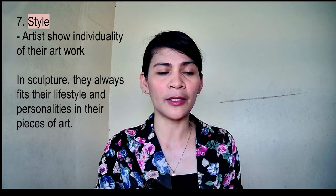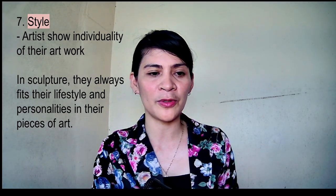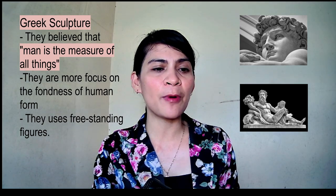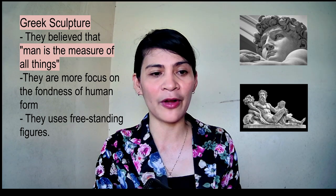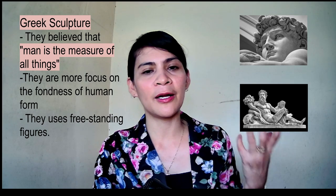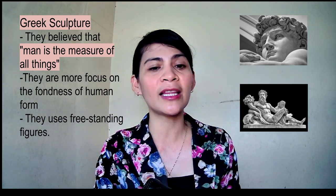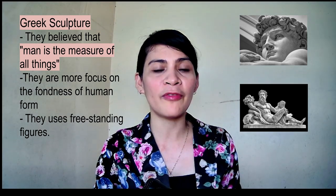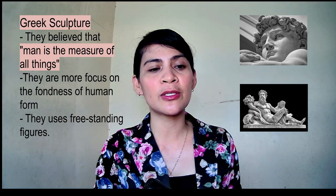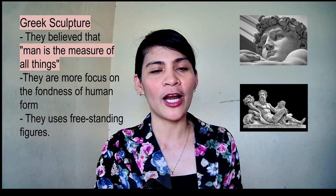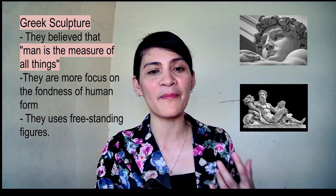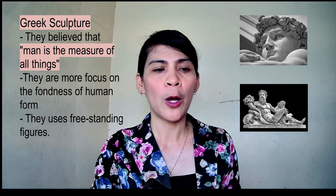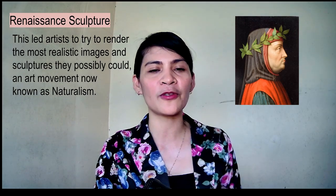Now let's talk about Greek sculpture. The Greeks believed that man is the measure of all things. That is why their sculpture is very focused on the fondness of the human form. The Greeks use freestanding figures — for example, the body of a woman or a man — trying to portray the perfect human form. That is a perfect example of Greek sculpture.